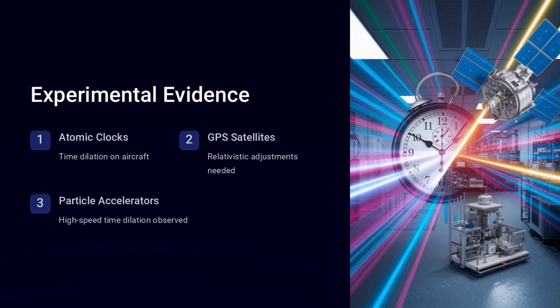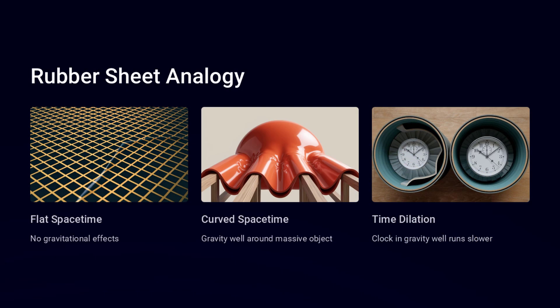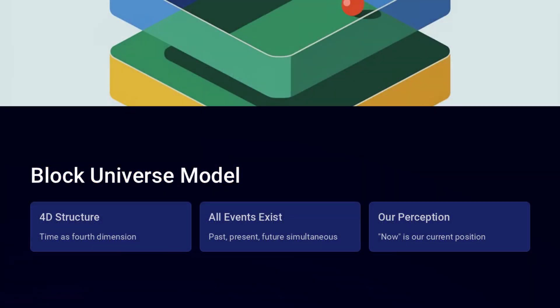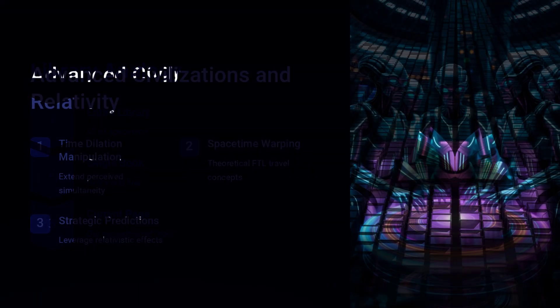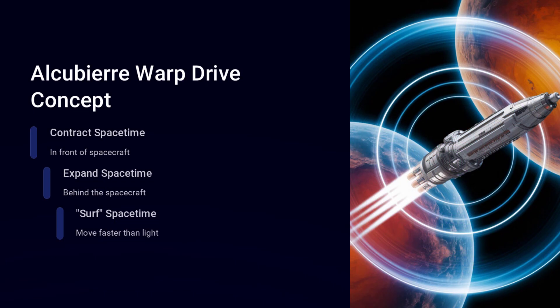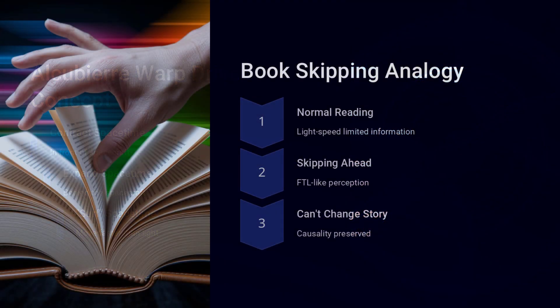But what if you start walking toward Andromeda? Because of how time and space are linked in relativity, your new 'now' will slice through spacetime differently, meaning that in your frame of reference, the alien fleet might not have launched yet. Meanwhile, if your friend walks in the opposite direction, their 'now' could include the event where the fleet has already arrived at its target.